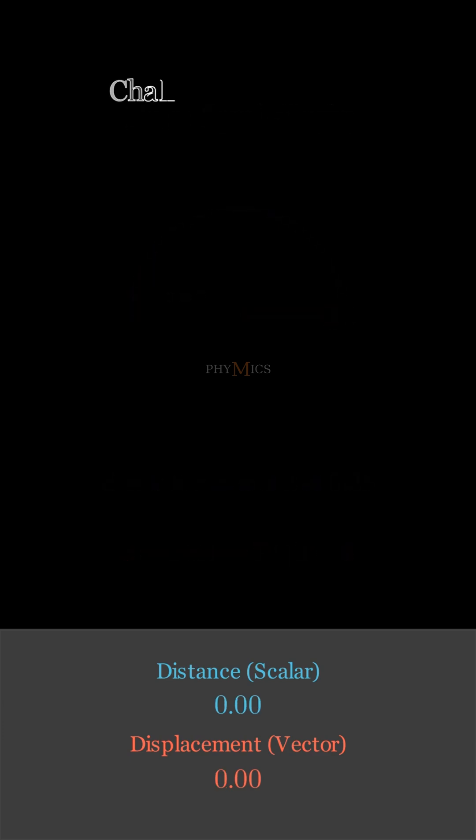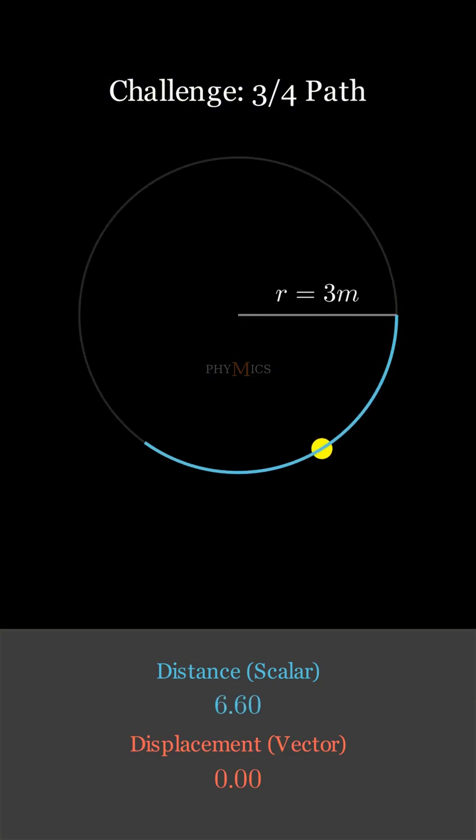The last example is actually a challenge problem. The problem states that an object moves along the circumference of a circle but completes only 3/4 of a round. We need to calculate the distance and displacement of the object. I want you to pause the video and write your answers in the comment section.